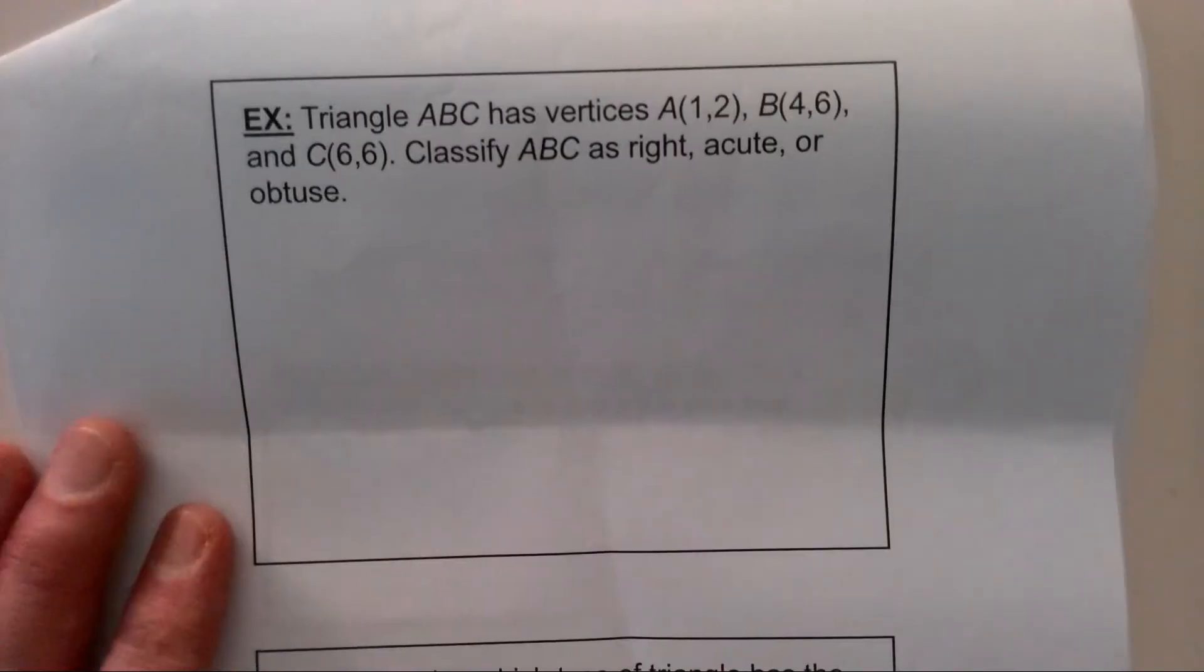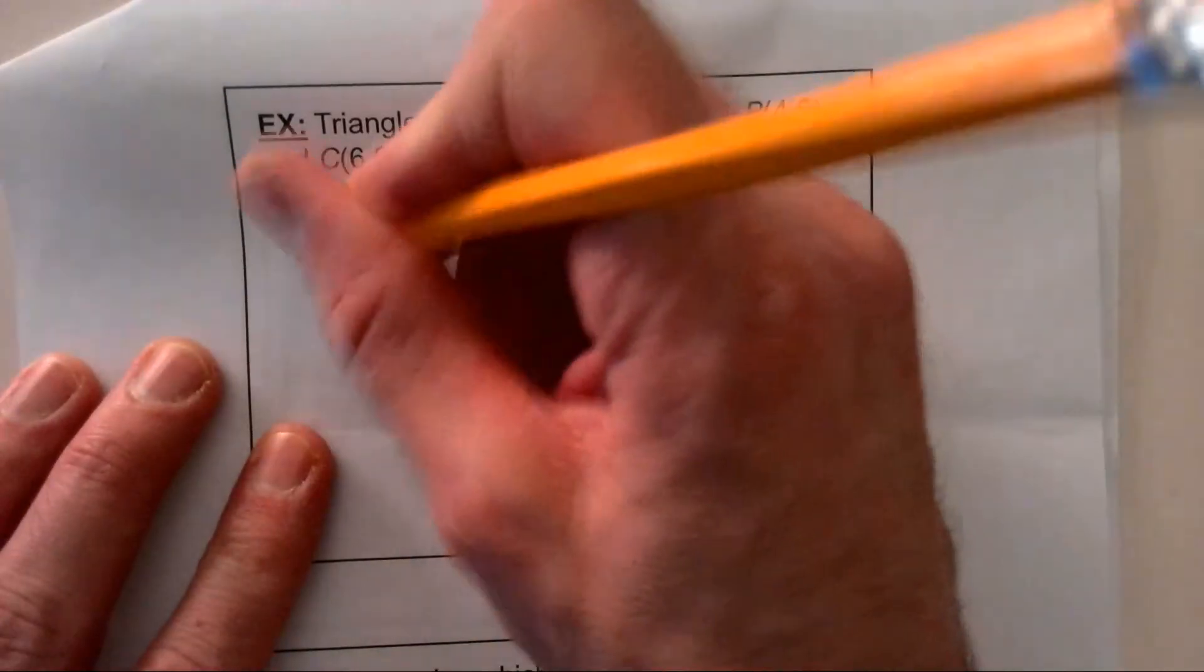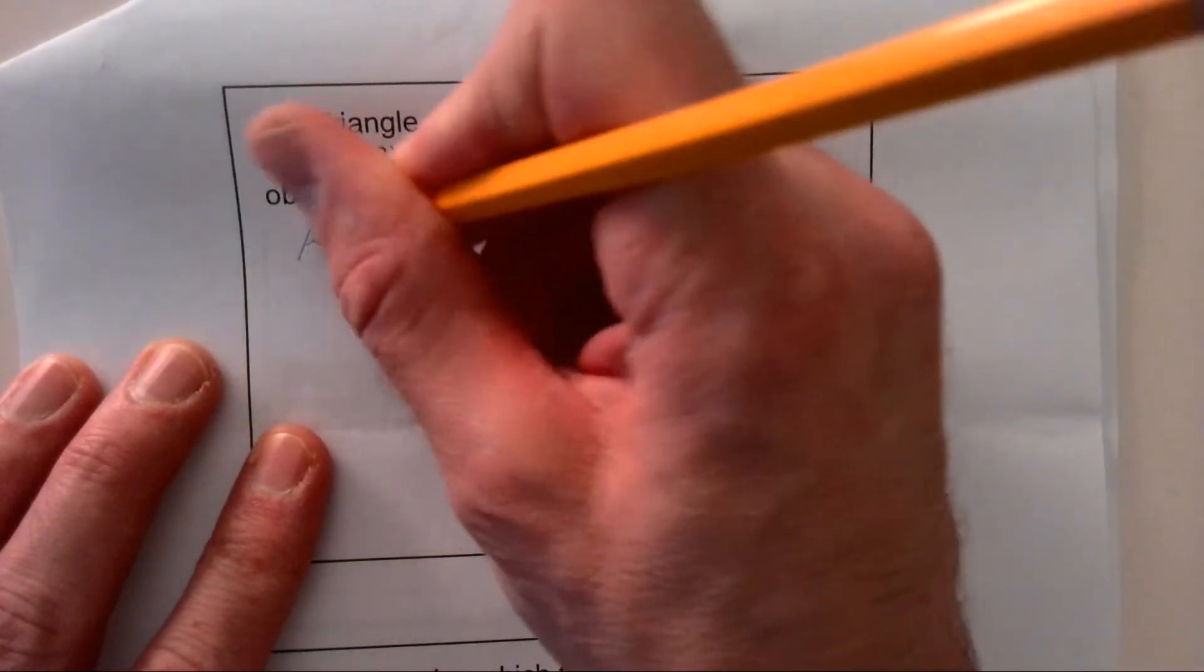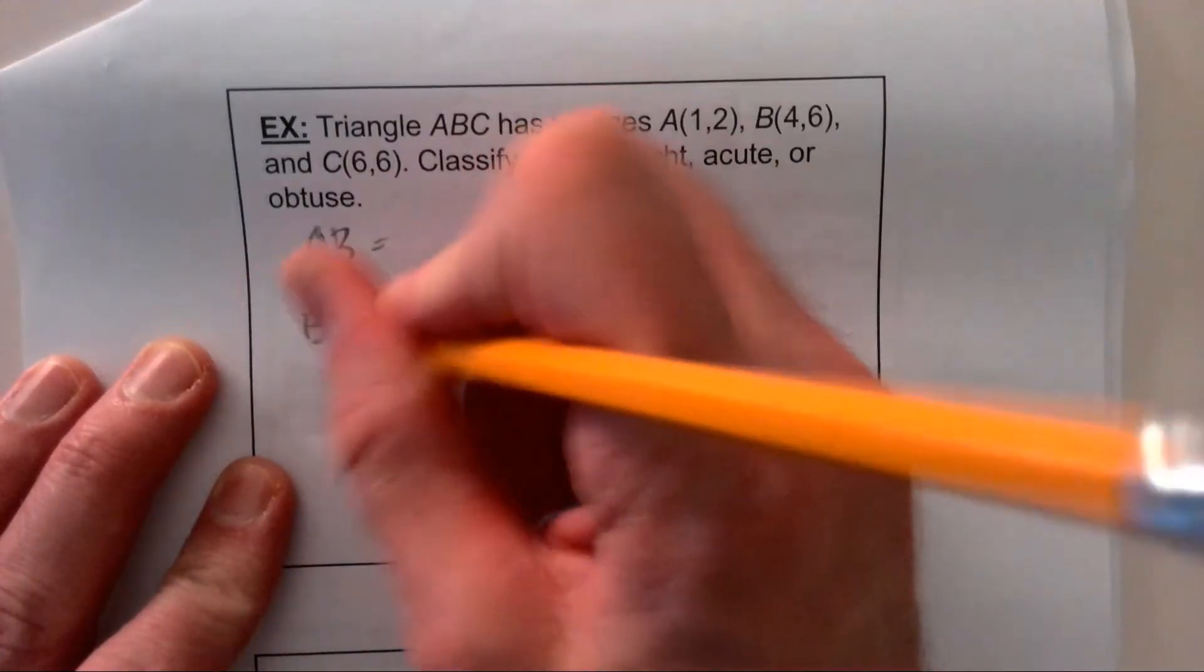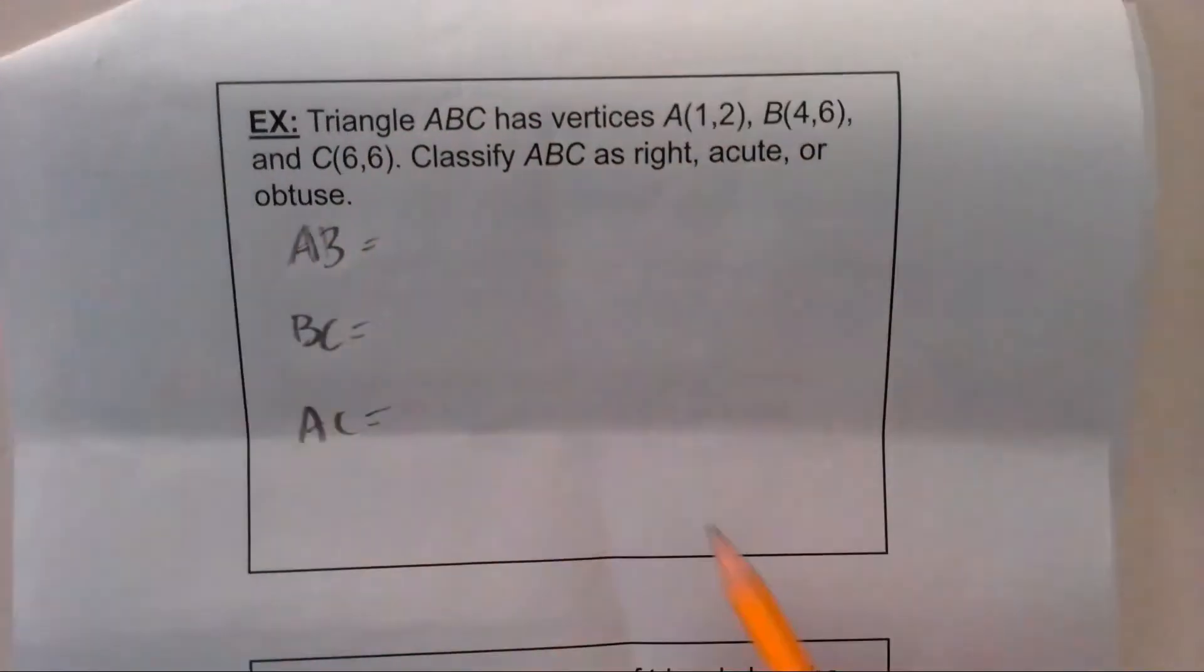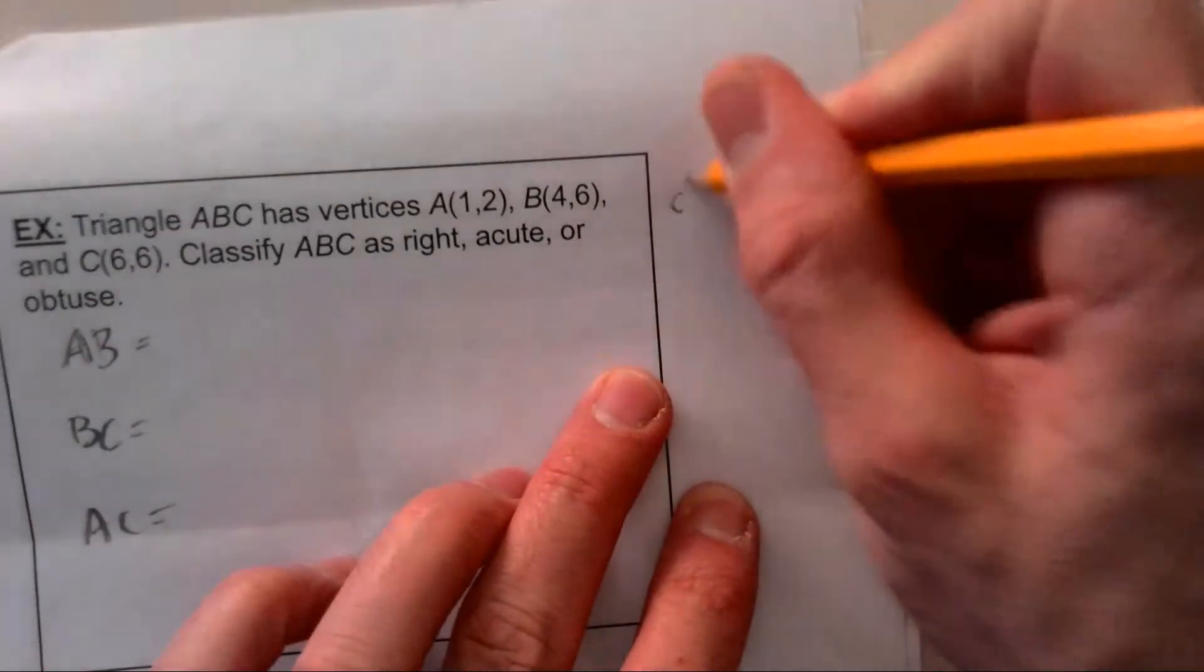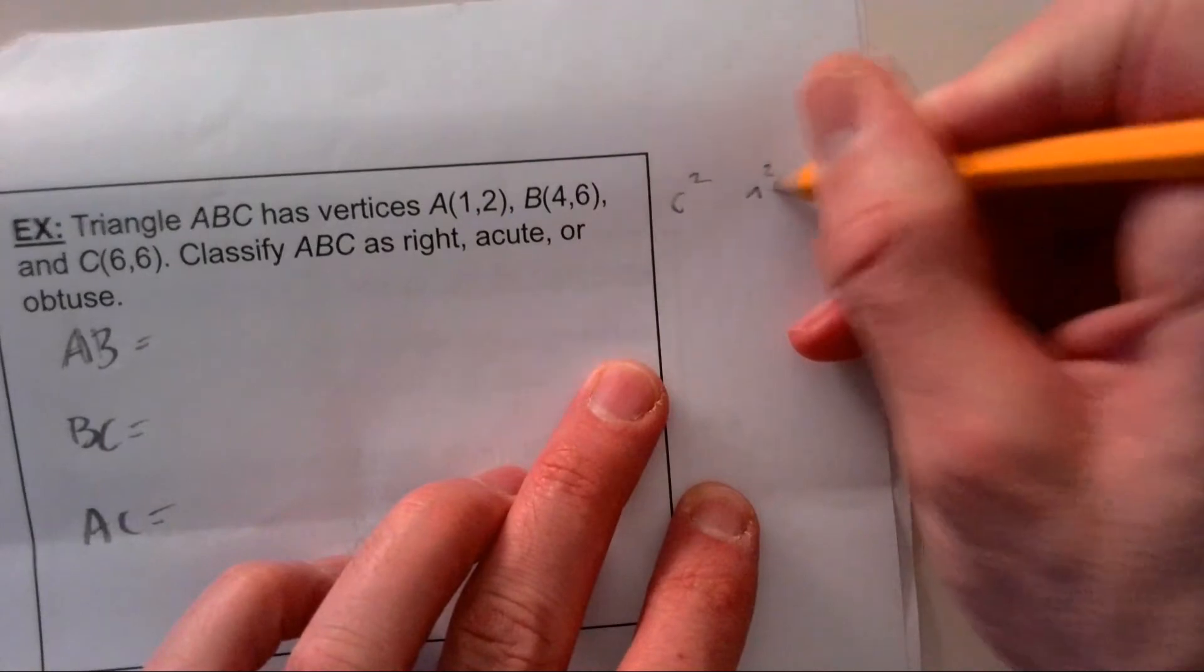We need to justify things by measurements. For this one we need to figure out the length of AB, the length of BC, and the length of AC. And then we need to compare those lengths. We want to see what's the longest side and then make that comparison with c squared and a squared plus b squared.